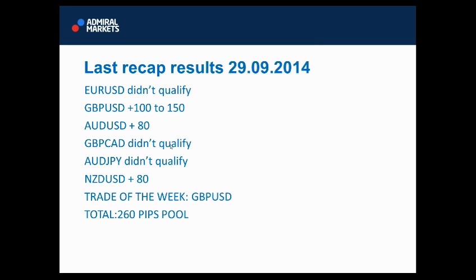Last recap results from September 29, 2014: Euro-Dollar didn't qualify. GBP/USD plus 100, 250 pips pool. Aussie 80 pips pool. GBP/CAD didn't qualify. USD/JPY didn't qualify. New Zealand Dollar plus 80. Trade of the week: GBP/USD. Total 260 pips pool. If you made 30 out of those 260, then it's great — all that counts is pips and profit.